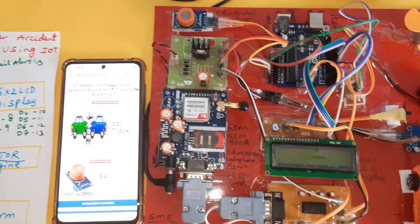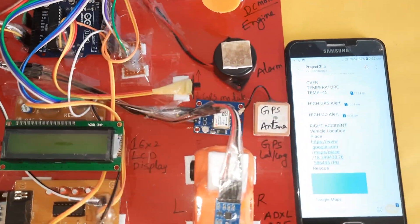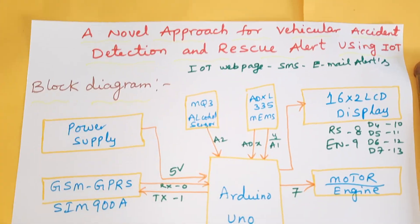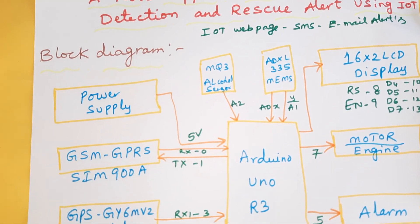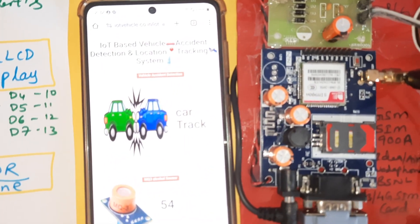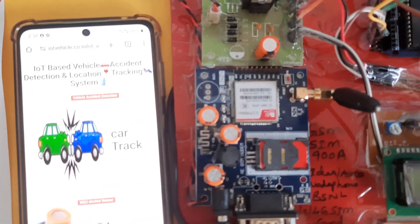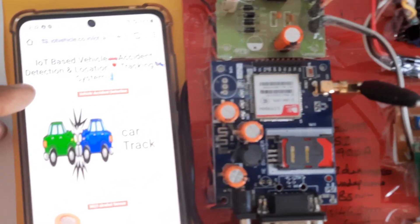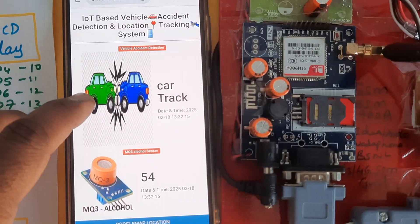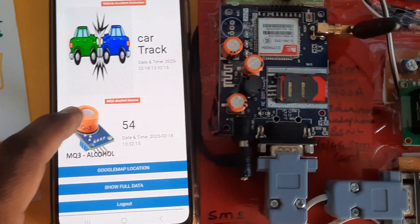Hi, we are from SVS Embedded. The project title is a novel approach for the vehicle accident detection and rescue system — an IoT-based vehicle accident detection and rescue system, and detection and location tracking system using MEMS sensor and alcohol sensor. This is our web page.